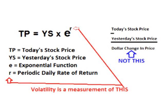Historic volatility is the volatility of the periodic daily returns. The periodic daily return is the rate that price changes each day using continuous compounding. Each day the price of a stock is the previous day's price times e raised to some value. The value that e is raised to is the rate of change for that day — in other words, the periodic daily return.